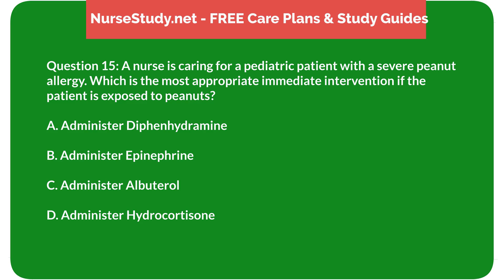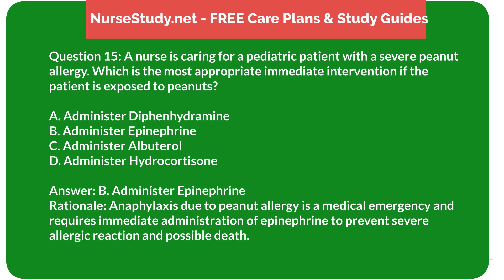Question 15: A nurse is caring for a pediatric patient with a severe peanut allergy. Which is the most appropriate immediate intervention if the patient is exposed to peanuts? A) administer diphenhydramine, B) administer epinephrine, C) administer albuterol, D) administer hydrocortisone. Answer: B) administer epinephrine. Rationale: Anaphylaxis due to peanut allergy is a medical emergency and requires immediate administration of epinephrine to prevent severe allergic reaction and possible death.